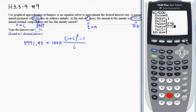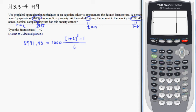Hit graph. That's y1. Now I can see y2, so we look for the intersection. Second, calc, number five, first curve enter, second curve enter, and the guess enter.